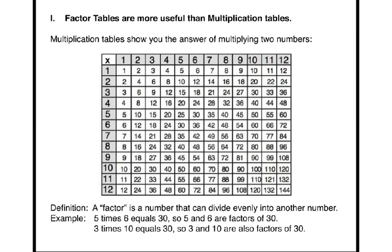Example: 5 times 6 equals 30, so 5 and 6 are factors of 30. Example: 3 times 10 equals 30, so 3 and 10 are also factors of 30.